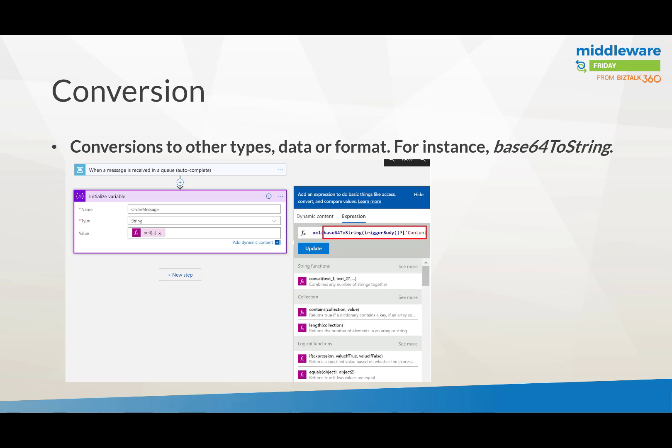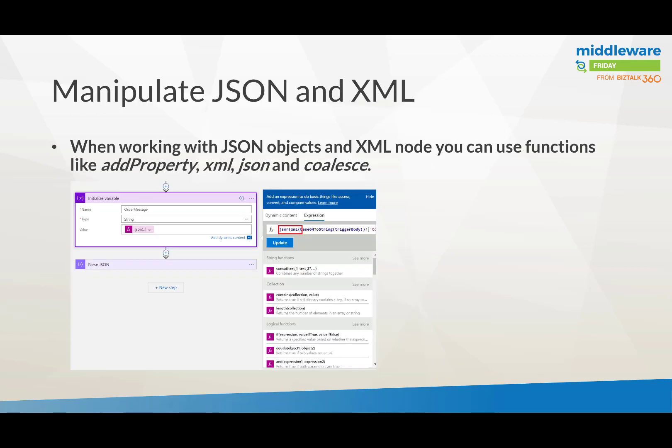One of the first things you would do is a conversion. When a message enters a Service Bus queue and you pick it up from a Logic App, it's generally base64 encoded. So if you want to get it to a string, you can use one of the conversion functions — base64 to string. Then you can convert that string into XML, and subsequently make that JSON, so you can tokenize the message and get to the elements.